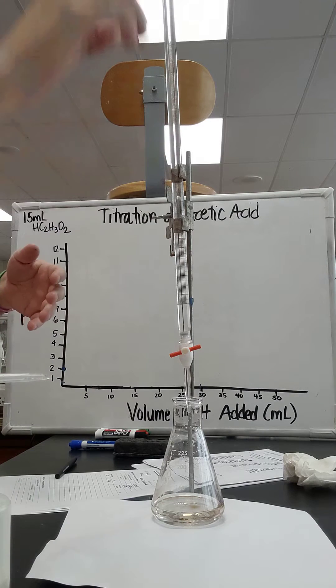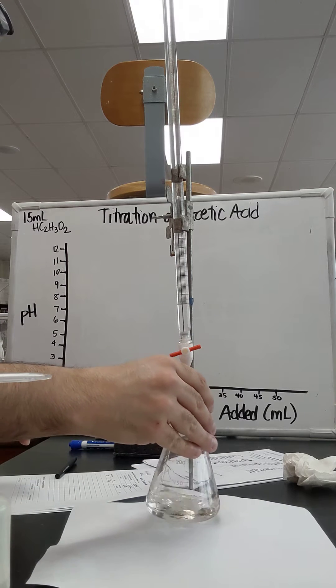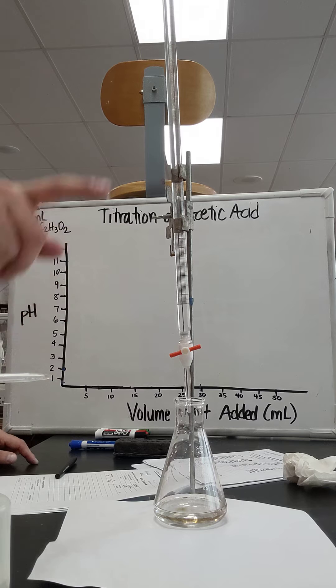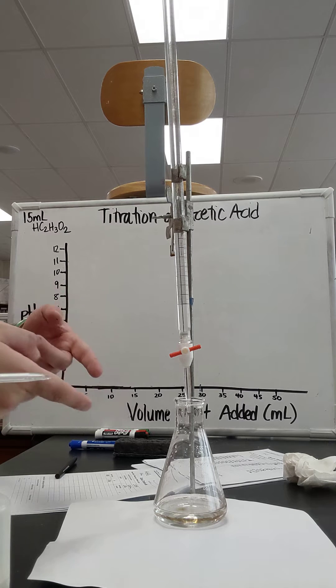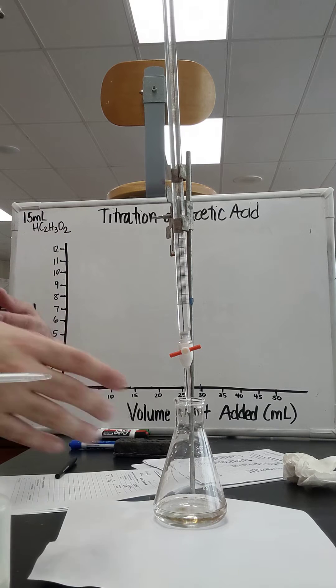So in my burette, I actually have it up to the zero mark to make my measurements easier. I have 2 molar sodium hydroxide. I took the initial pH of the acetic acid and it was 2, a lot higher than the initial pH reading of hydrochloric acid, which means that this is definitely a weaker acid. Higher pH means less acidic, more basic.